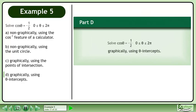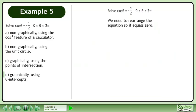In Part D, solve cos theta equals negative 1 over 2 graphically using theta intercepts. We need to rearrange the equation so it equals 0.